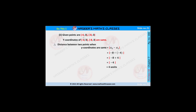In the second bit, the given points are (-4, -3) and (-8, -3). By observing, we can say that the y-coordinates are the same. The distance is given by |x2 - x1|. Substituting, we get |-8 - (-4)|. Here minus and minus is plus, so we get |-8 + 4| = |-4| = 4 units.